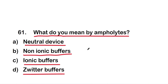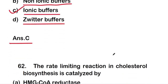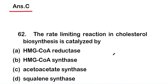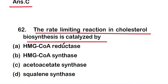The right answer is option C, that is ionic buffer. So ampholyte means ionic buffers. The next question is: the rate-limiting reaction in cholesterol biosynthesis is catalyzed by option A...